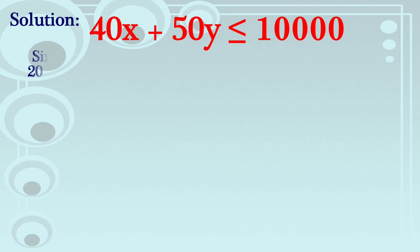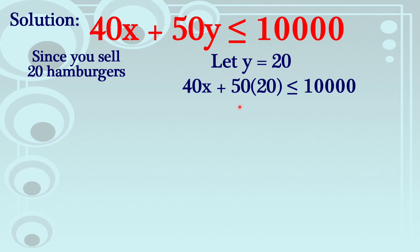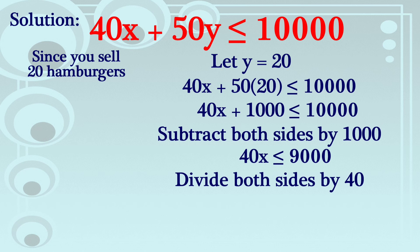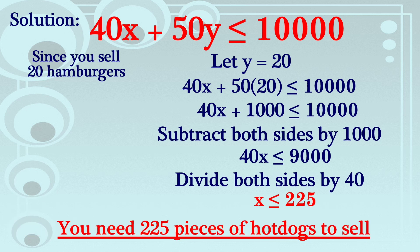Since you sell 20 hamburgers and ang ating hamburgers ay Y, we let Y equal 20, then substitute sa ating inequality. 50 times 20 is 1,000, so 10X plus 1,000 ≤ 10,000. Subtract both sides by 1,000: 10X ≤ 9,000. Divide both sides by 10: X ≤ 225. So when you sell 20 hamburgers, you need to sell 225 pieces of hot dogs to make a maximum of 10,000 pesos.